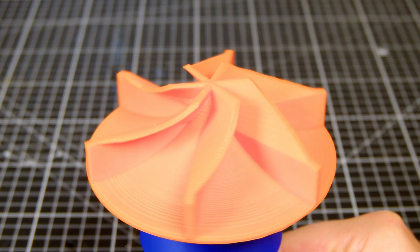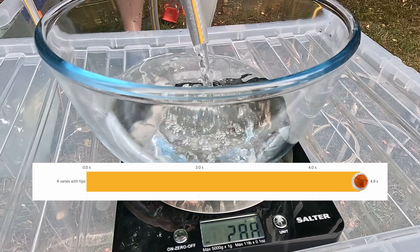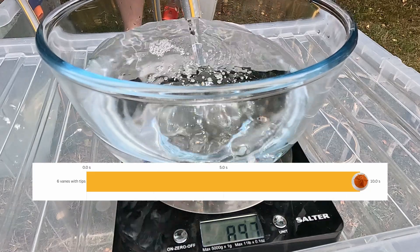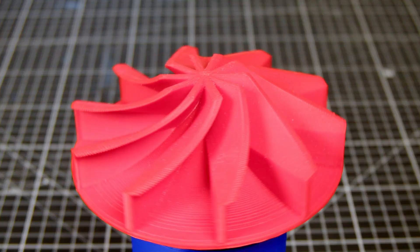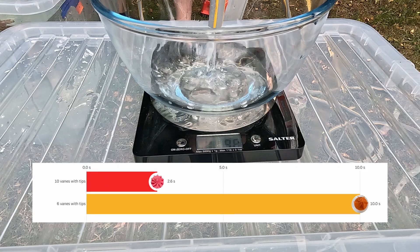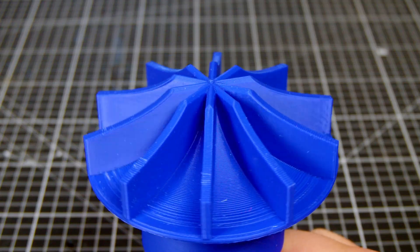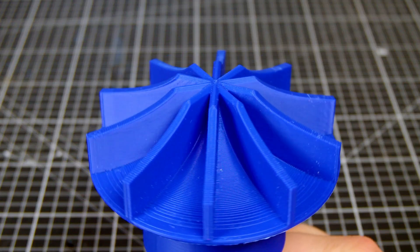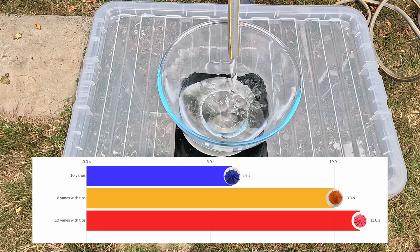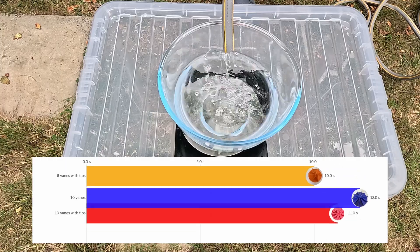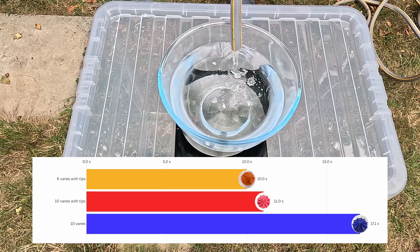First up, the orange impeller. Wow, it's pretty fast. Only 10 seconds for a liter. Next up, the red impeller. Can it beat the orange one? Oh, not quite. 11 seconds. Next up, the blue impeller with the straight veins. Let's see how that compares. Oh, that's a lot slower. 17.1 seconds for a liter.